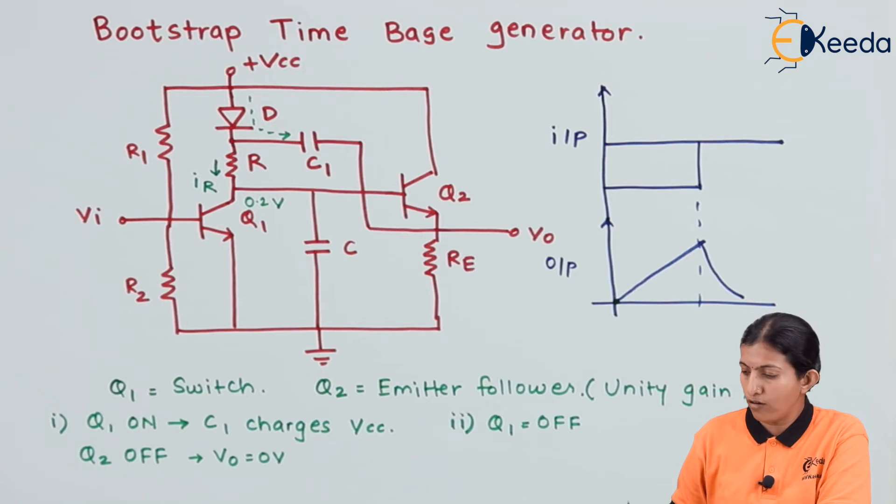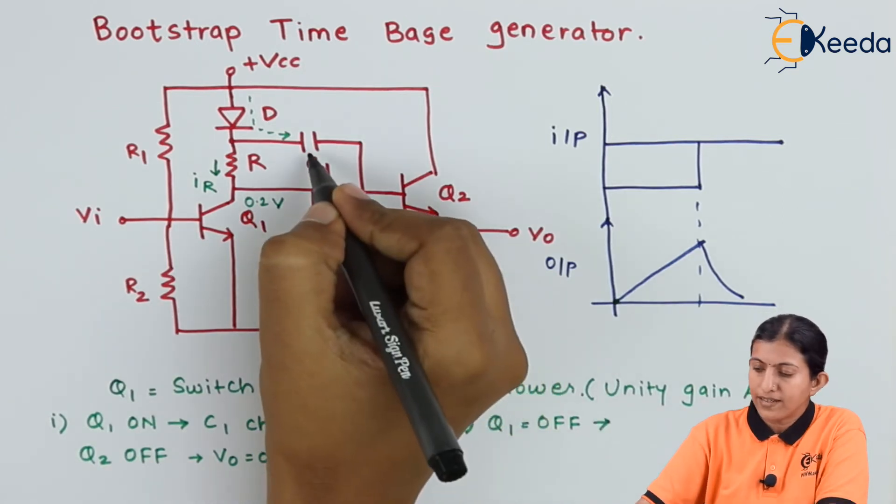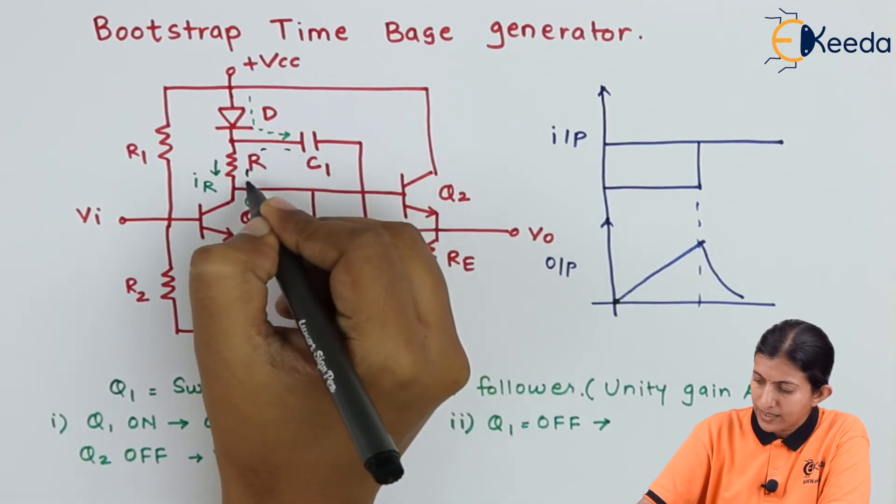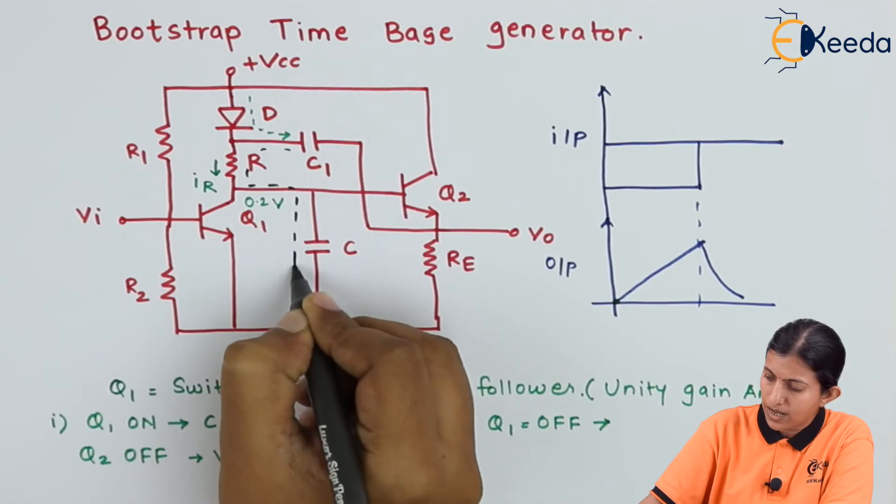As it is off, capacitor C1 starts charging capacitor C through resistor R.